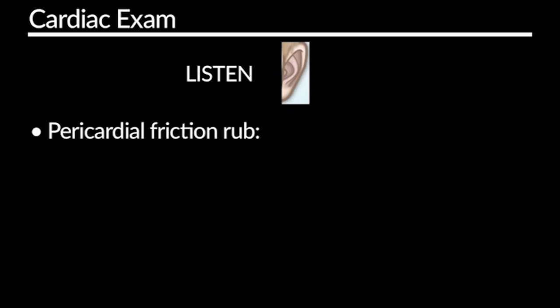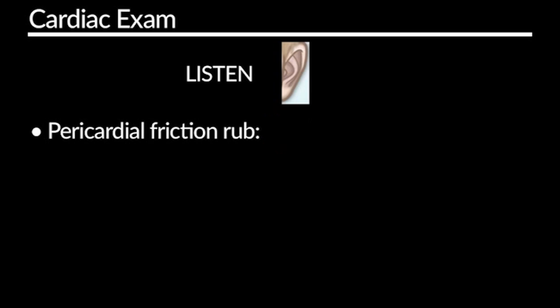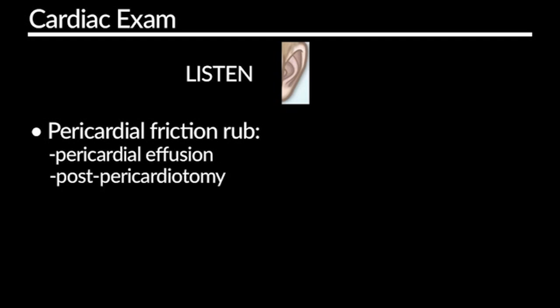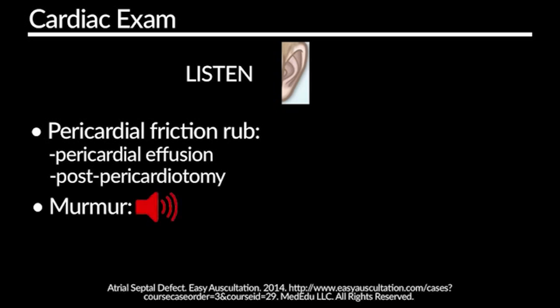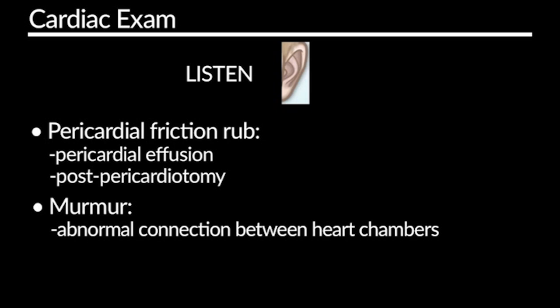Some other abnormal heart sounds you may want to be aware of include a pericardial friction rub. This may sound sort of like if you took a piece of hair and rubbed it between two fingers and listened to it. This is concerning, as it could indicate that there's a pericardial effusion or it could develop after a pericardiotomy. The final thing you'll want to be aware of is a murmur. This often indicates that there's some sort of an opening or connection between two of the chambers in the heart, or can indicate abnormal valve function. Either way, a murmur should be brought to the attention of the care team in order to best diagnose and treat the problem.